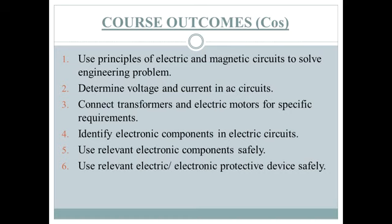The fourth, fifth, and sixth course outcomes are for Basic Electronics Engineering. The fourth is to identify electronic components in electric circuits. The fifth and sixth cover how to use electronic components and protective devices safely and properly without any damage.